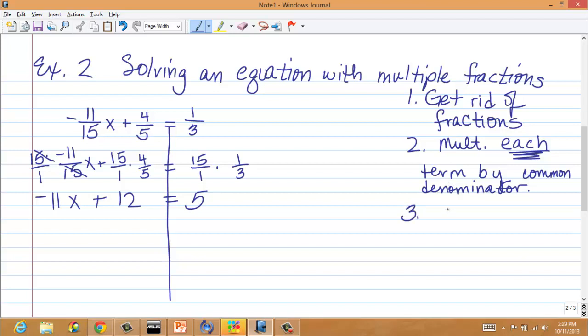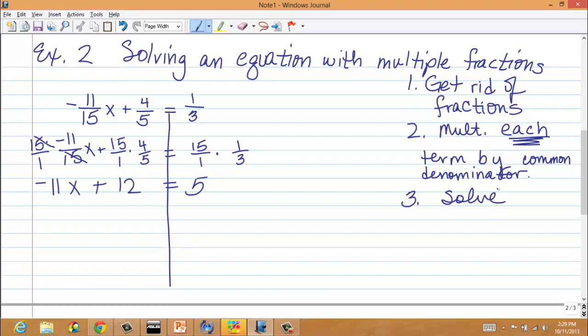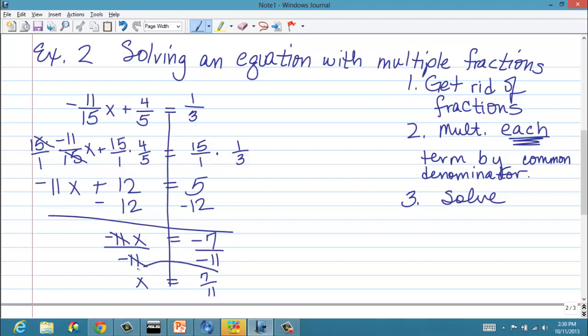And then, I'll say your next step is to just solve the equation. Okay? So, I'm trying to isolate x. Because 12 is positive, I'm going to use the opposite. The opposite of positive 12 is a negative 12. Use the opposite on both sides. Negative 11x equals negative 7. I'm trying to get x by itself. Since negative 11 is being multiplied times x, we need to divide both sides by negative 11. Okay? And therefore, x equals positive 7 over 11. How did I get that? Because we're doing a negative divided by a negative. That gives us a positive. And this would be our answer. Remember, we must always check our solutions.